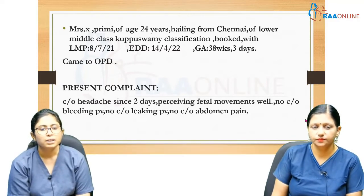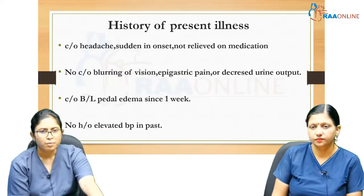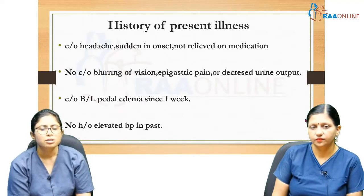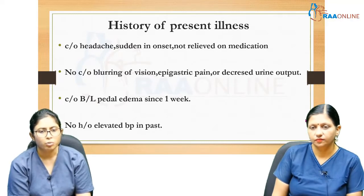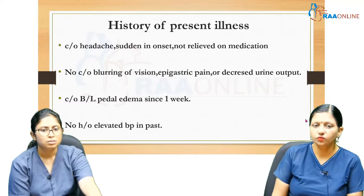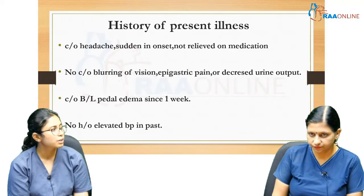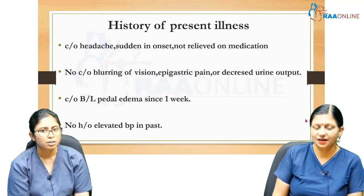She came to OPD with complaint of headache since 2 days, but she is perceiving fetal movements well. No complaints of bleeding or abdominal pain. The headache is sudden in onset, not relieved on medication, with no associated blurring of vision, epigastric pain, or decreased urine output. There is bilateral pedal edema since 1 week and no history of elevated BP in the past. Epigastric pain is due to stretching of Glisson's liver capsule.